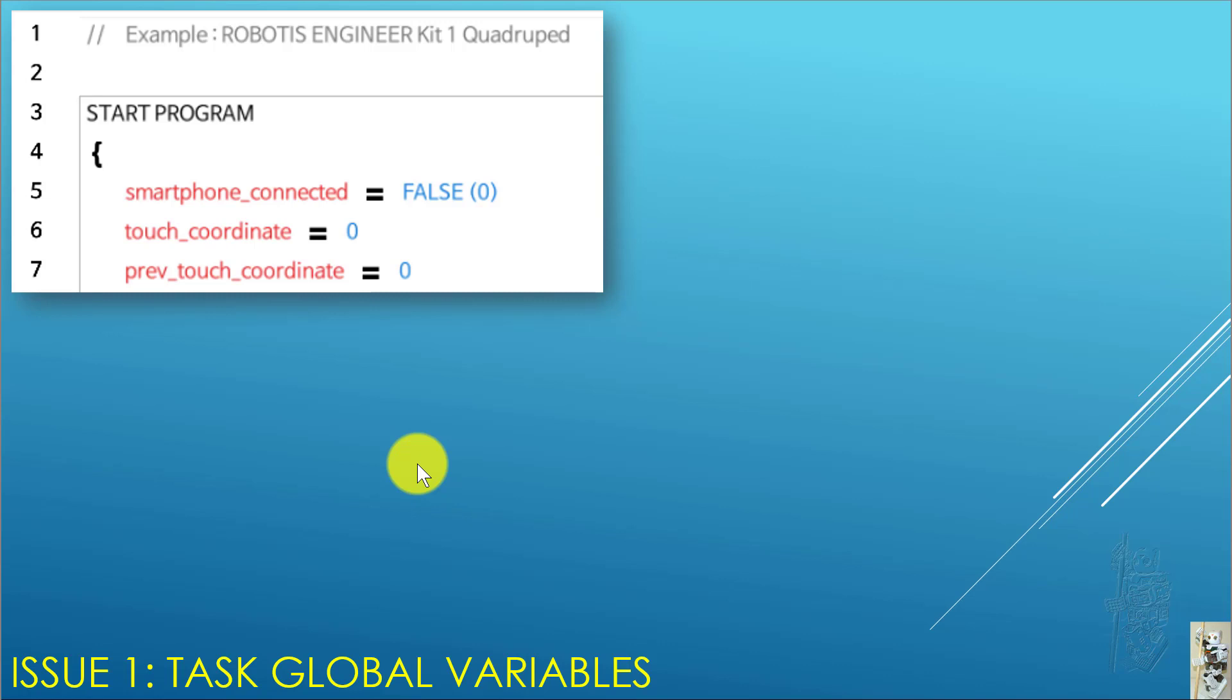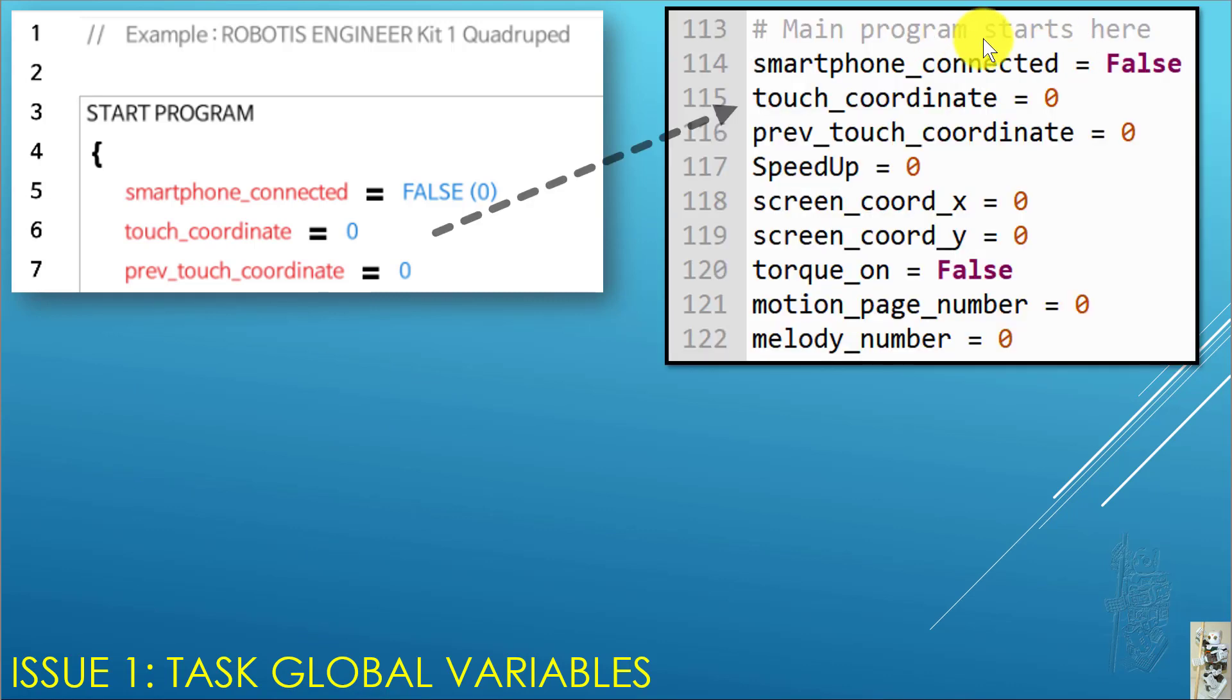The first issue you can encounter or need to keep in mind when you convert a task program to a MicroPython program is the variable used in task. Every time you use any variable in there, by default, its scope is global. So first thing you need to do is when you create a MicroPython equivalent to a task code, you find all those parameters, which I did here, and declare them at the beginning of your main program. And then if you scan through the actual task code for the Quattropet, you'll find out that these are the parameters also used. So I just reproduce them in there, exactly how they are used inside the task program.